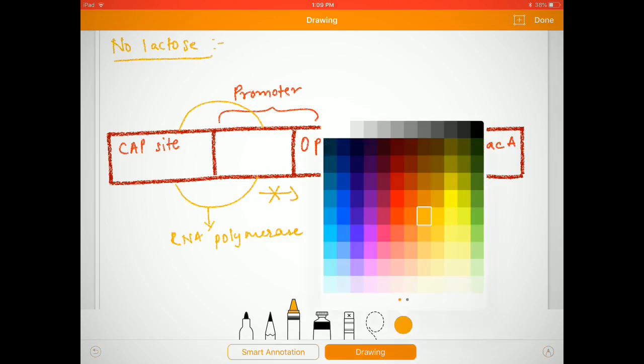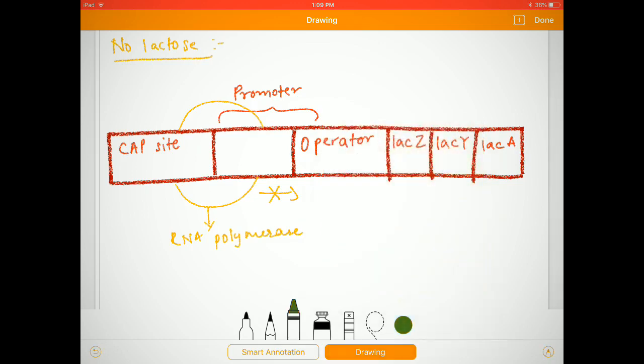This will not allow the further transcription of the lac operon because this repressor is bound or attached here because there is glucose available in the environment. So the cell does not require other enzymes like beta-galactosidase, permease, etc.